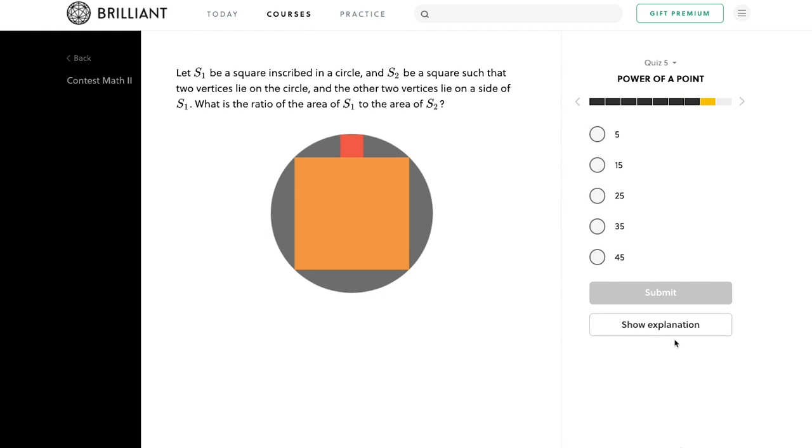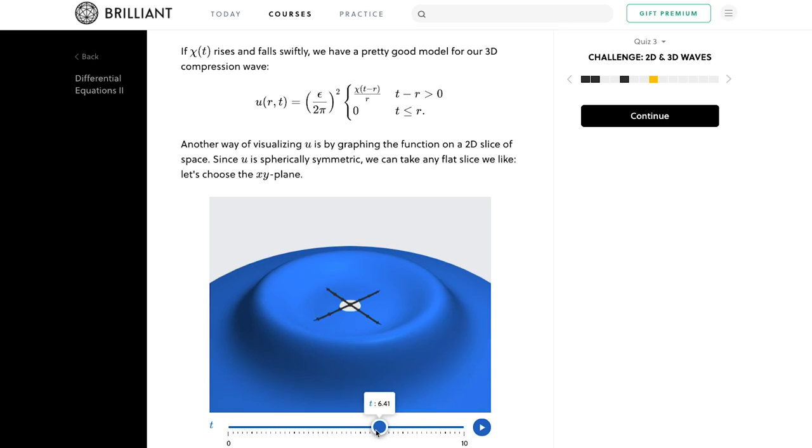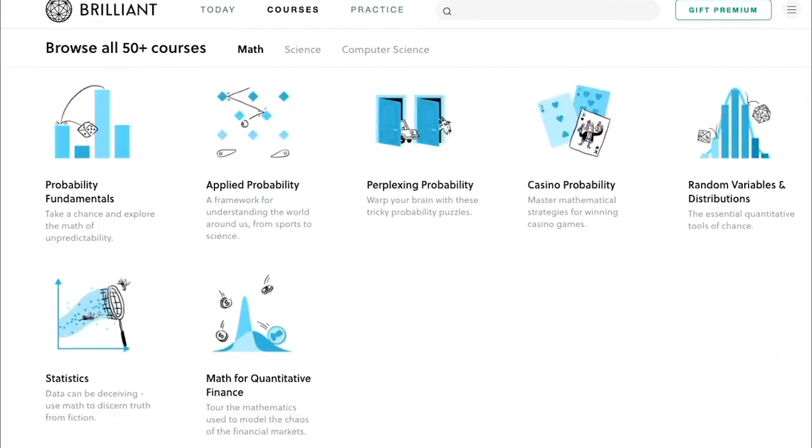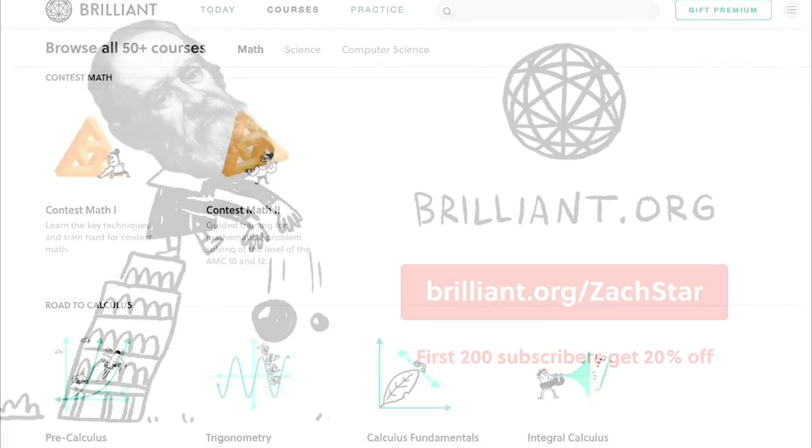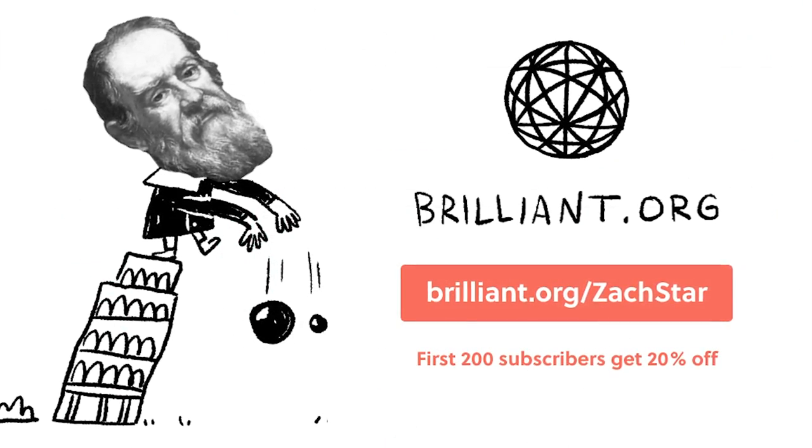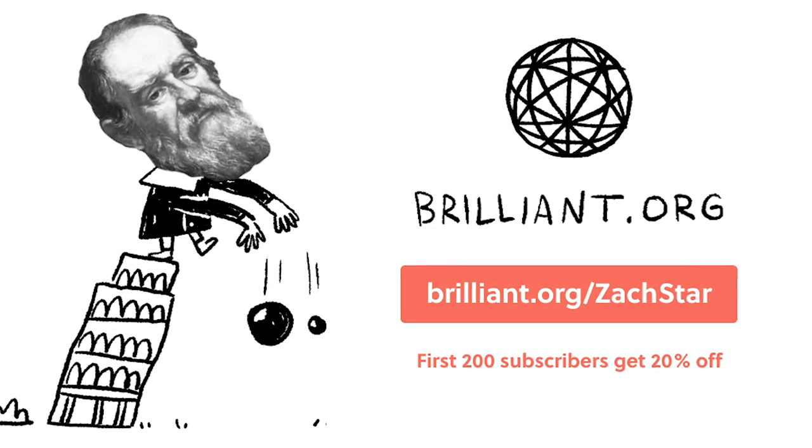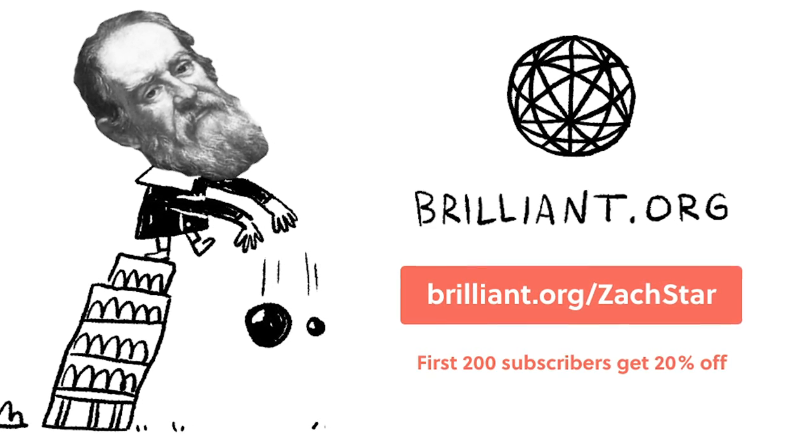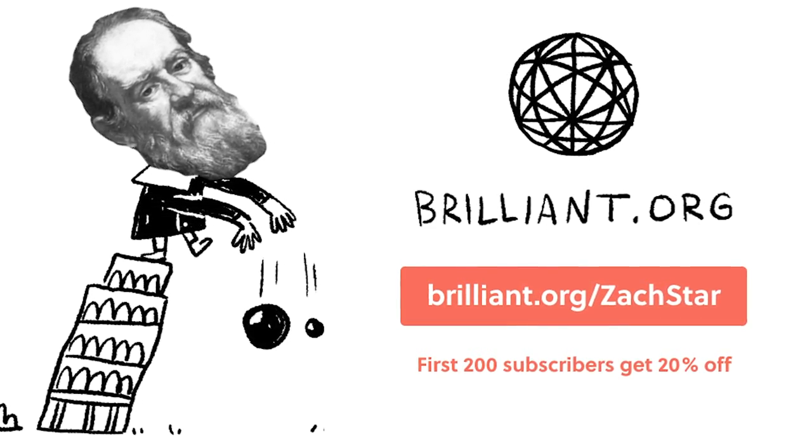One thing I've noticed is that Brilliant is great at introducing less common math puzzles and applications, so no matter what your level, you're likely to come across something new. And if you want to get ahead for the next semester or just brush up on some old math topics, you can jump into courses such as vector calculus, differential equations, group theory, and plenty more. Also, the first 200 people to sign up by using the link below or by going to brilliant.org slash zackstar will get 20% off their annual premium subscription.